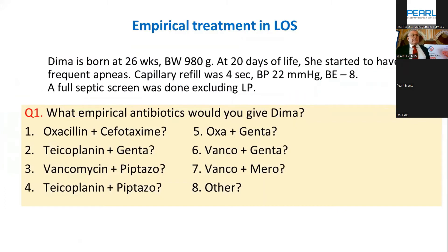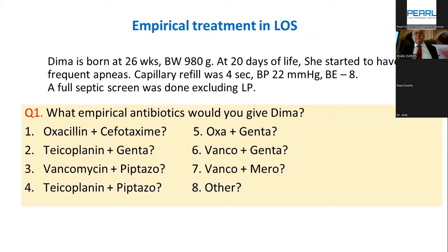Now, late onset sepsis. To give a case example: Dima is born at 26 weeks, 980 grams. At about three weeks of life she had frequent apnea which she didn't have before, signs of shock with prolonged capillary refill, low blood pressure, elevated base deficit of minus eight. We suspected sepsis and a full septic screen was done, excluding LP because she's in shock.